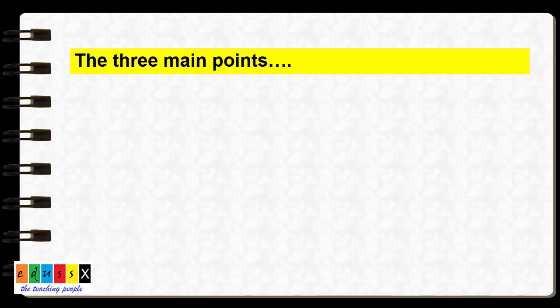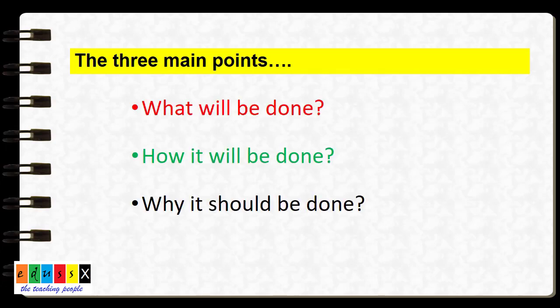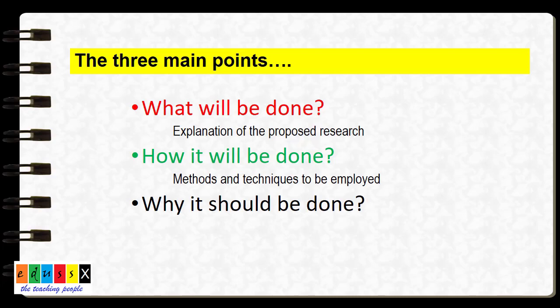The three main points that a research proposal must emphasize are: what will be done, how it will be done, and why it should be done. 'What will be done' gives the explanation of the proposed research. 'How it will be done' elaborates the methods and techniques to be employed. 'Why it should be done' gives the answer for the novelty and importance of the study.